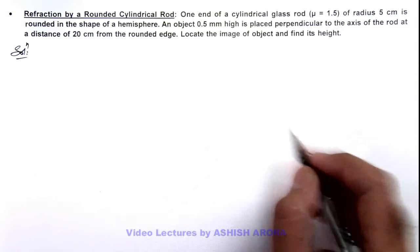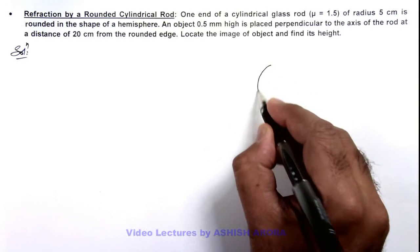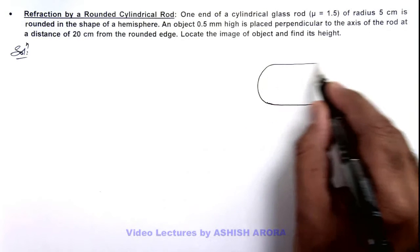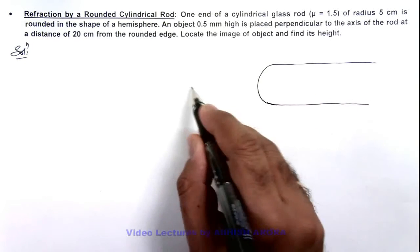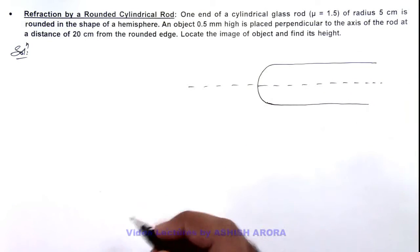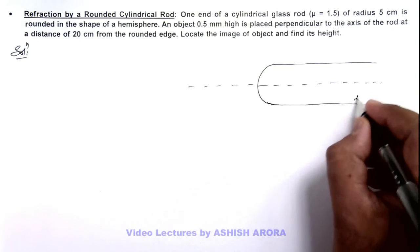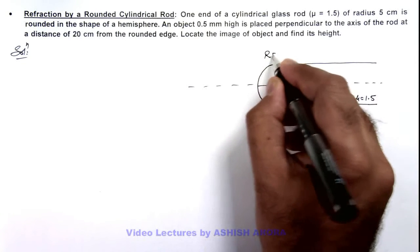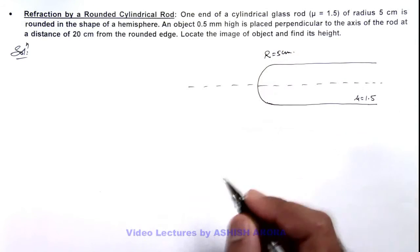So here if we draw the situation, this is given like this. This is a cylindrical rod of which one end is rounded. We consider this line as principal axis of this rod. We are given that its refractive index is 1.5, radius of curvature is 5 centimeters which is rounded here.